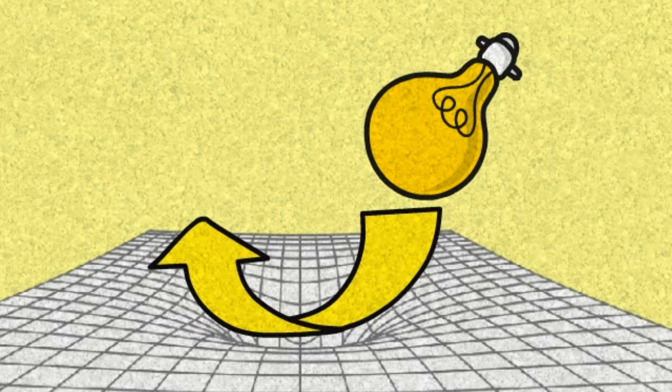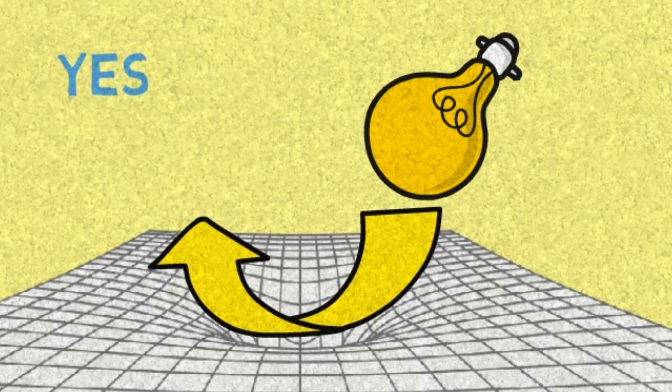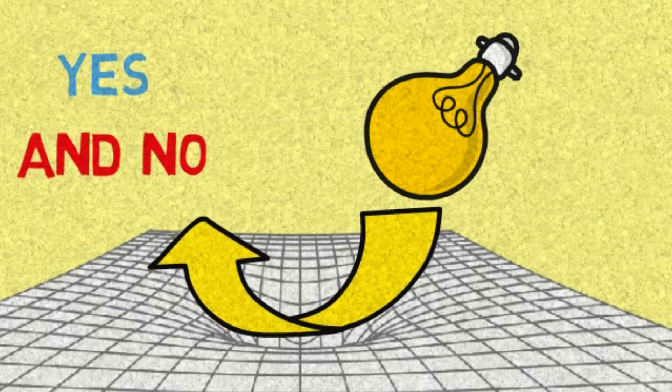The answer to the question, is light affected by gravity, is apparently both yes and no. Let me explain. Light is affected by gravity, but not directly. It is affected indirectly.